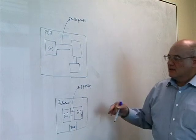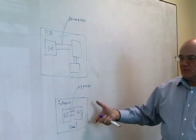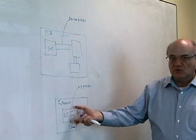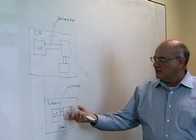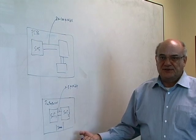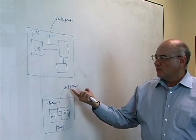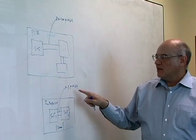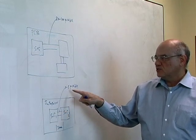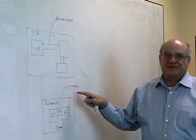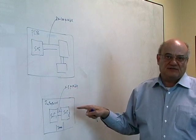On the other hand, if you do that on the interposer, now you have a known good die and you are running a distance maybe three millimeters or four millimeters, but also more important is the traces that you are running is only one micron trace, which the capacitance is very small.